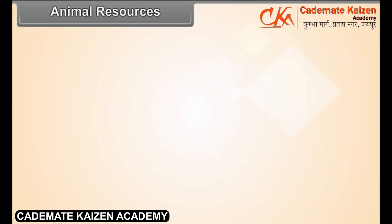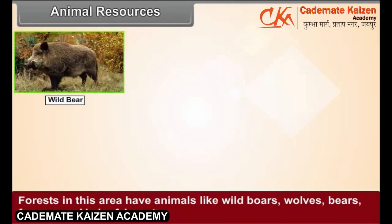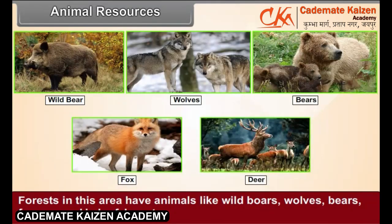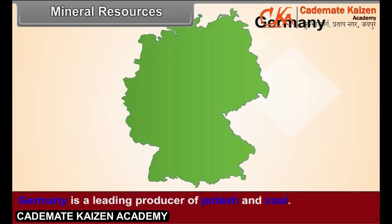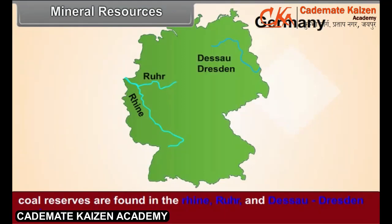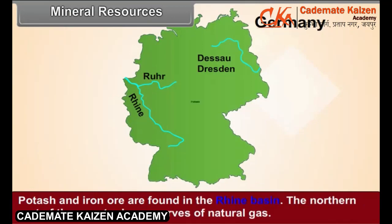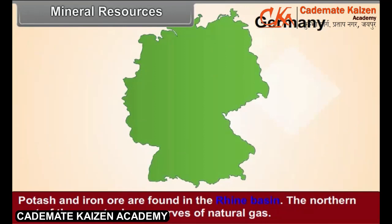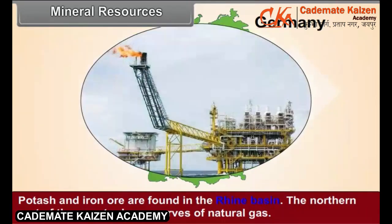Animal Resources. Forests in this area have animals like wild boars, wolves, bears, foxes, many kinds of deer, etc. Mineral Resources. Germany is a leading producer of potash and coal. Coal reserves are found in the Rhine, Ruhr, and Dessau-Dresden regions. Potash and iron ore are found in the Rhine Basin. The northern part of the country has reserves of natural gas.